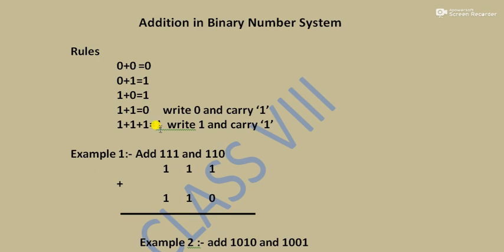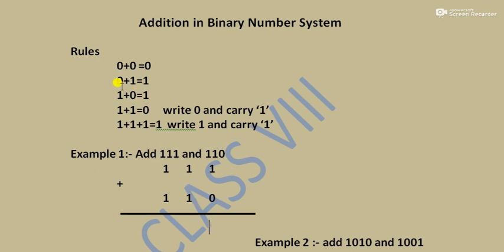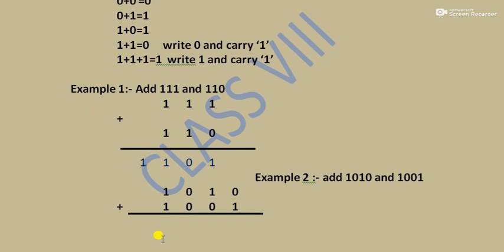Now let's see an example of how we add two binary numbers. We add 111 and 110. Starting from the right: 1 + 0 = 1; 1 + 1 = 0 (carry 1); 1 + 1 + carry 1 = 1 (carry 1); write the final carry 1. The answer is 1101.